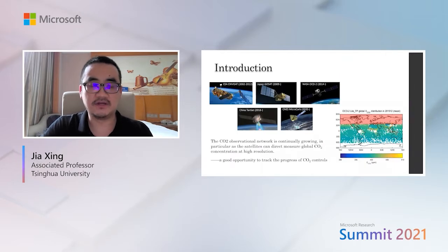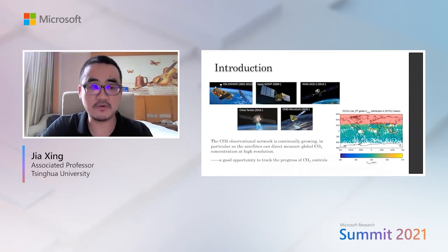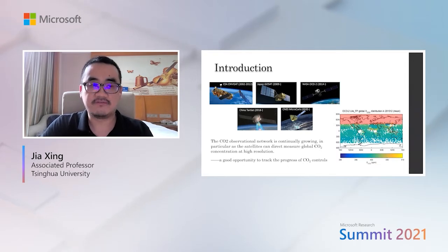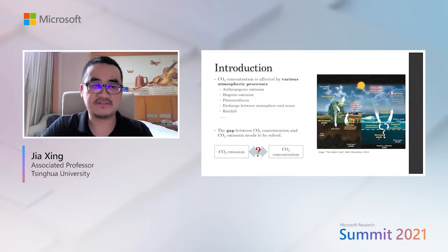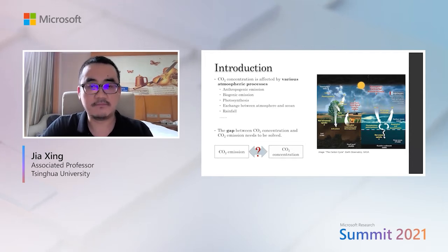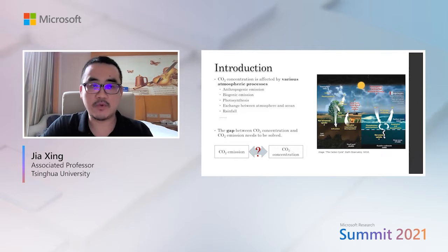So how can we examine the control effectiveness? Satellites provide very good products to observe CO2 concentration from space. However, what we observe is CO2 concentration, but what we control is CO2 emissions — they are not equal. When emissions enter the atmosphere, they go through a series of atmospheric processes, including biogenic processes and exchanges between the atmosphere, ocean, and rainforest. This big gap between emission and concentration makes it challenging to estimate emissions directly from concentration.